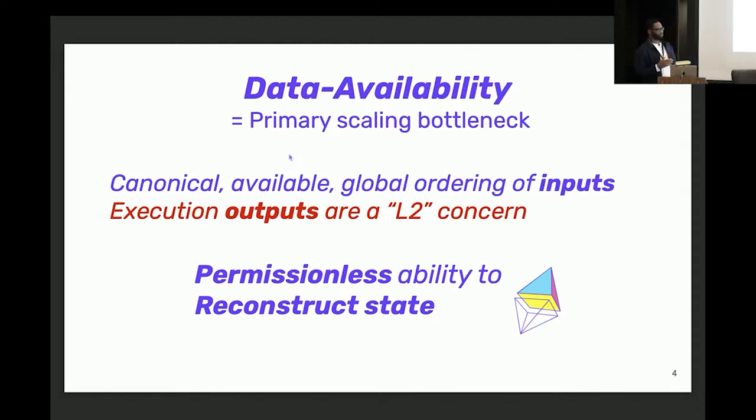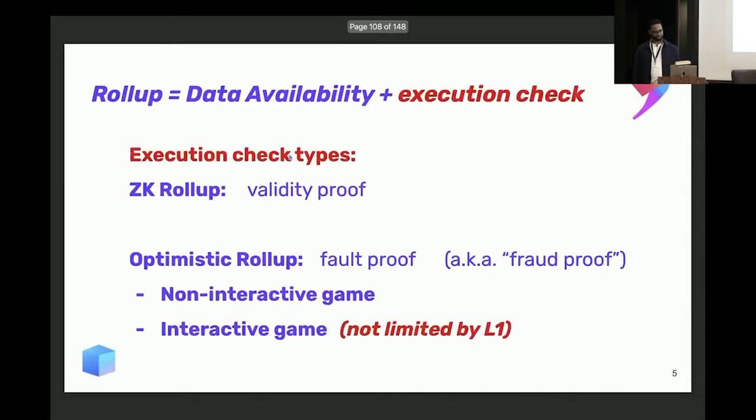Data availability is also related to execution in the sense that this data we're posting back to L1, from the perspective of a rollup, we consume that data to derive the chain. So the execution outputs are also an L2 concern. A rollup in a nutshell is the data and the execution check. It doesn't matter what kind of rollup it is, whether it's optimistic or ZK rollups. You can pretty much break it down into these two key intrinsic properties.